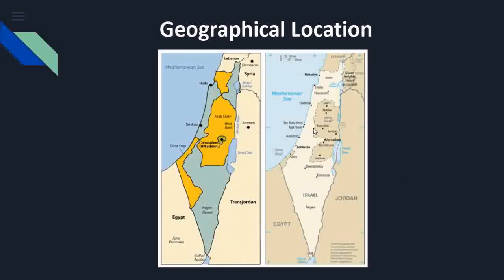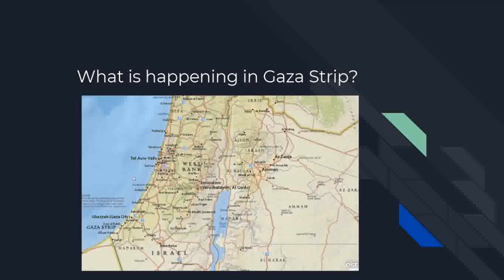Next you can see the comparison of the two states — Israel and Palestine — at the time of formation and after 1967. The yellow part at the time of formation was the Arab land belonging to Palestine, and the light blue part represented the Jewish state of Israel. After the 1967 war, Israel occupied many territories in the north as well as in the western part near the Gaza Strip region, and in this way the map has been changed.